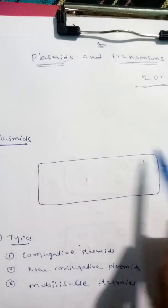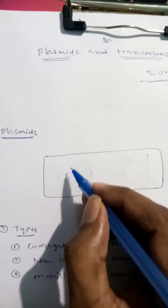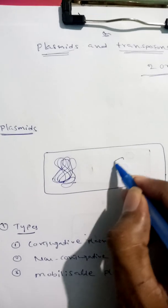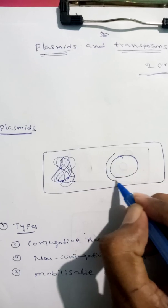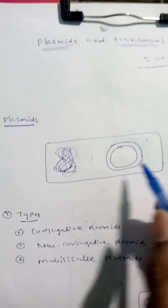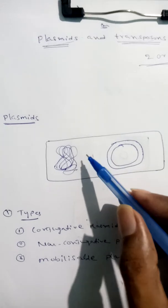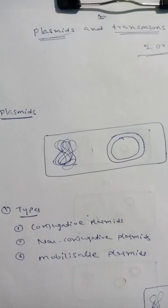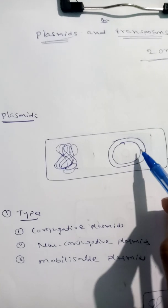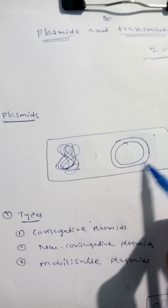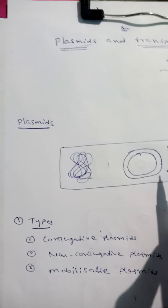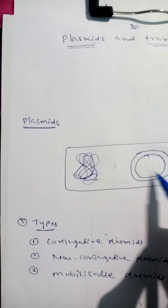Generally, bacteria contain chromosomal DNA and plasmid DNA. Every prokaryotic cell contains both chromosomal DNA and plasmid DNA. This plasmid DNA is circular and double-stranded, containing a few thousands of base pairs, and it replicates within the cells.